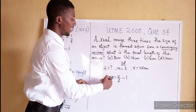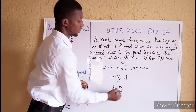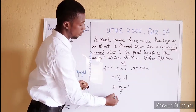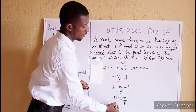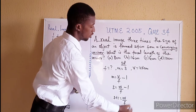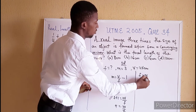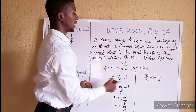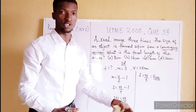From the expression M = V/F − 1, with M = 3 and V = 24: rearranging gives 3 + 1 = 24/F, so 4 = 24/F, therefore F = 24/4 = 6 cm. The answer is 6 cm, which is option C.